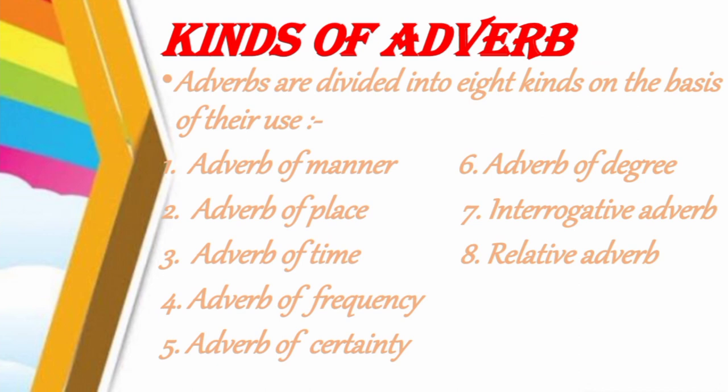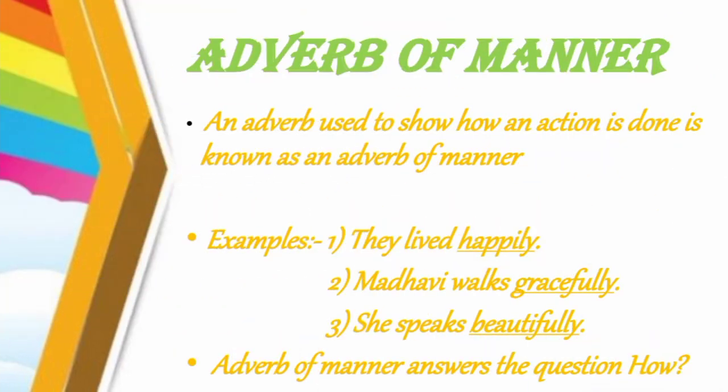Next, let us see the kinds of adverbs. Adverbs are divided into eight kinds on the basis of their use: first, adverb of manner; second, adverb of place; third, adverb of time; fourth, adverb of frequency; fifth, adverb of certainty; sixth, adverb of degree; seventh, interrogative adverb; and eighth, relative adverb. Let us see all of them in detail.